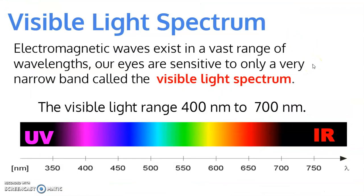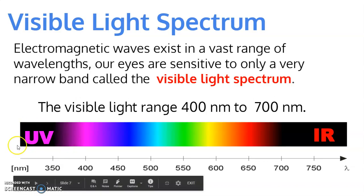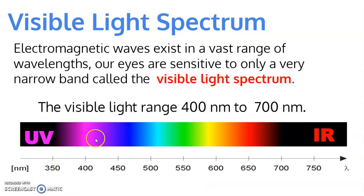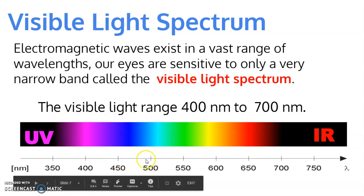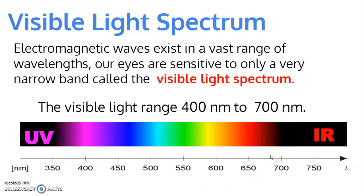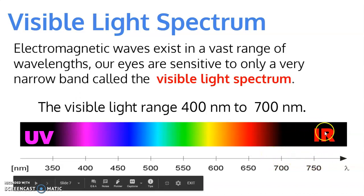We can only see electromagnetic radiation that is between 400 and 700 nanometers. UV light, which gives us sunburn, is just outside our visible spectrum. From about 400 to 425 nanometers is violet; 450 to 500 gives you blues; around 550 you get greens; then yellows and reds all the way up to 700 nanometers. Above 700 nanometers is infrared, which we also cannot see.